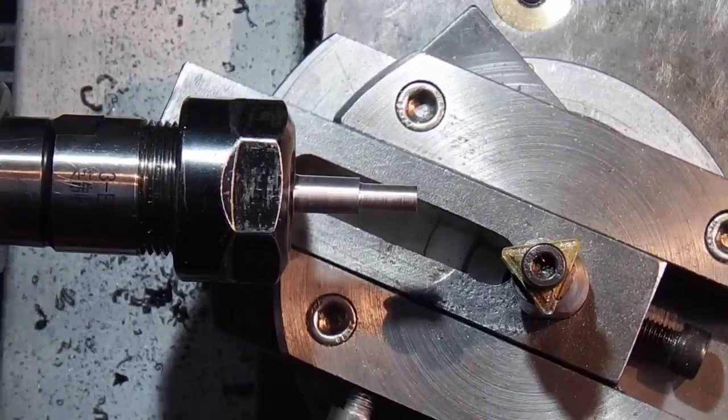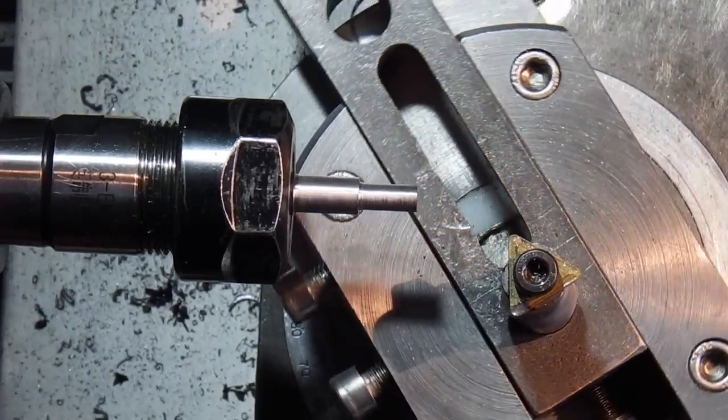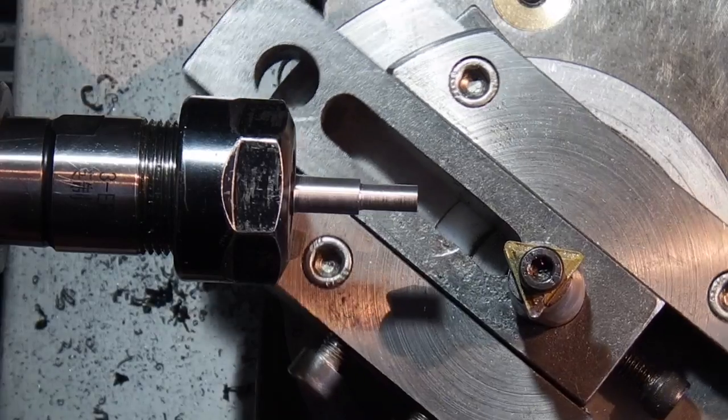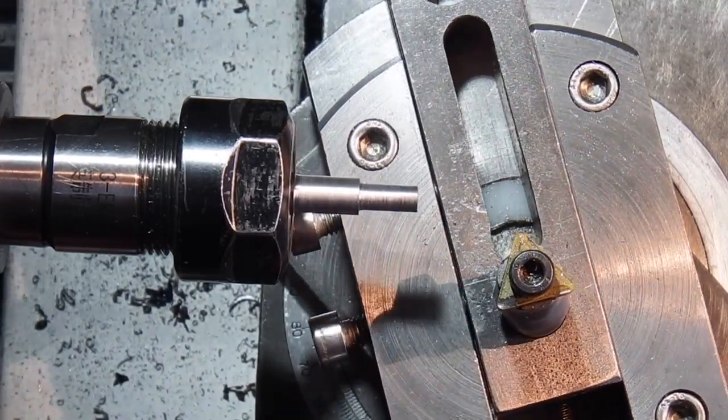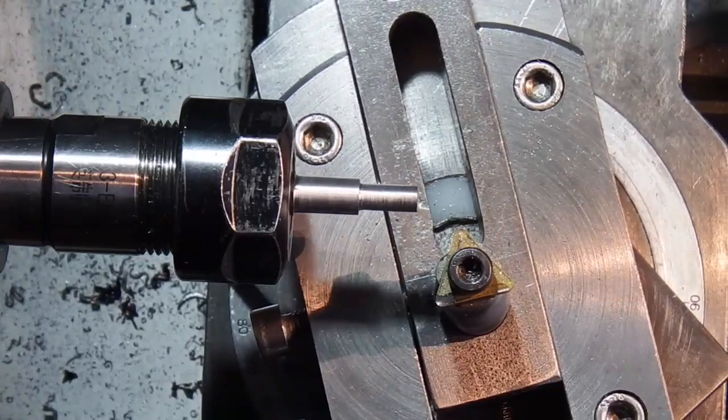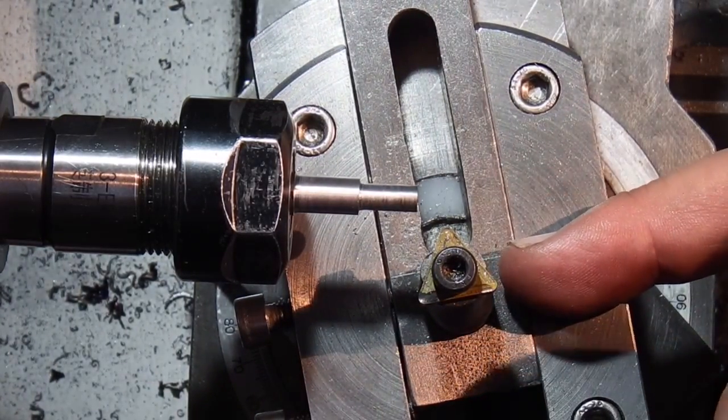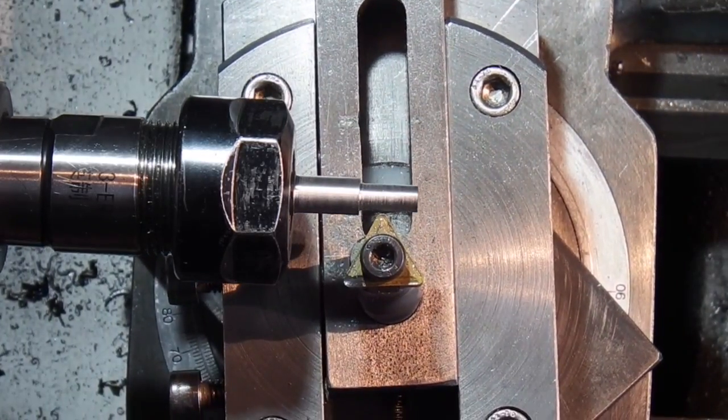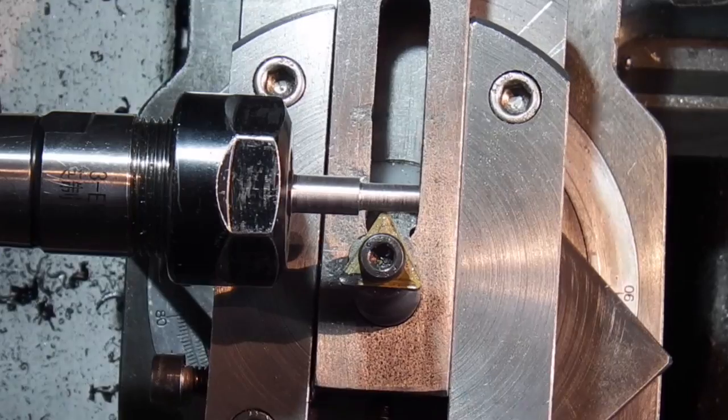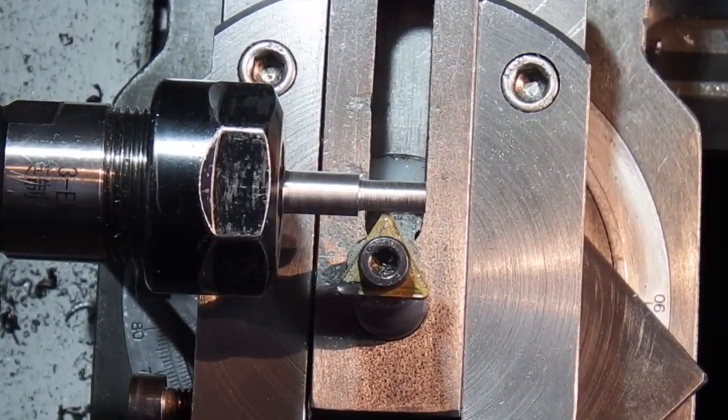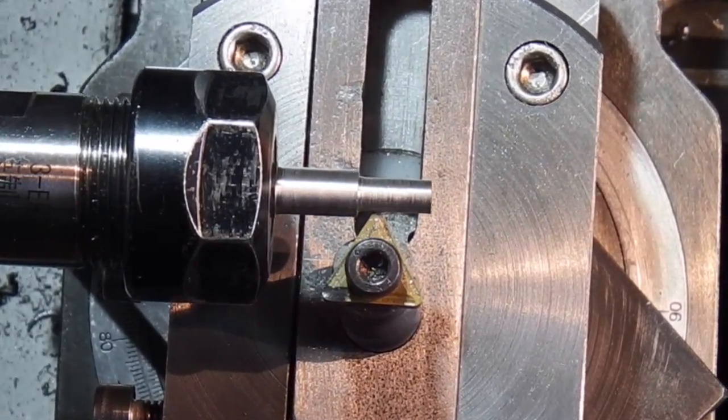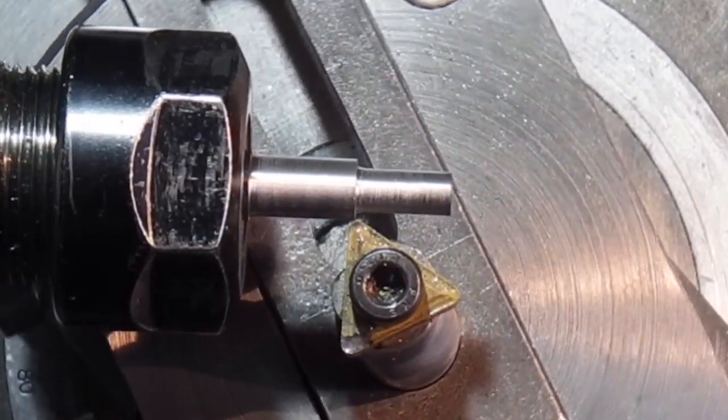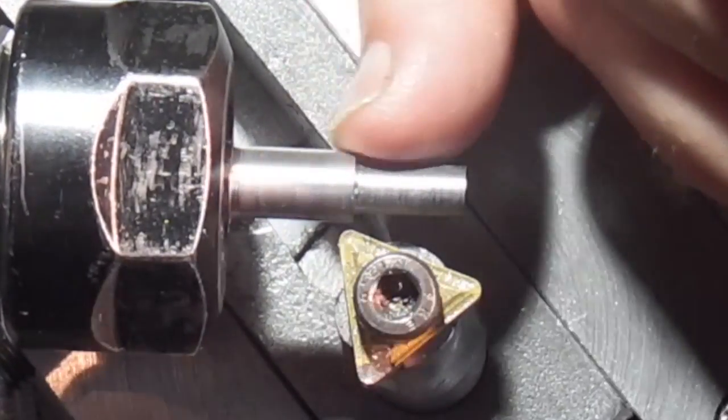I've just fitted my radius attachment on to the cross slide by removing the compound slide. This fits into the compound slide dovetail. I've just set the tool to give me a radius so what I'm going to do is bring this up to the bar so I can get a touch on it, move it in until I get it touching the edge. I just want to blend this sharp corner in here with the radius.